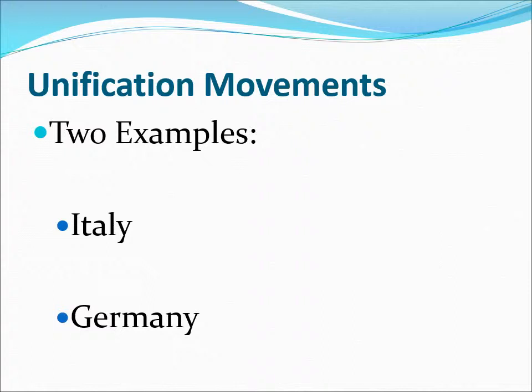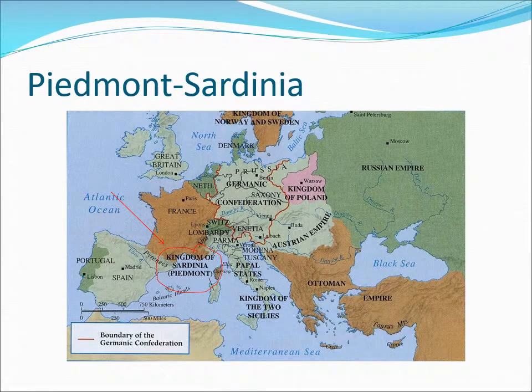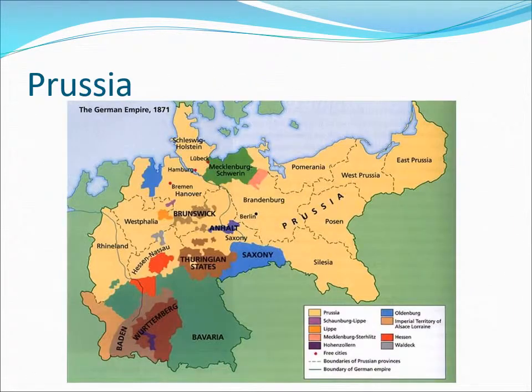Both Germany and Italy had a territorial nucleus, or core area, to lead the way. In Italy, it was the Kingdom of Piedmont-Sardinia; in Germany, it was Prussia. Prussia comprised a large, scattered area of numerous states all kind of merged together.